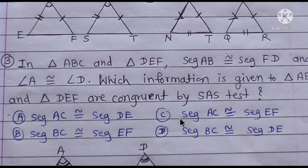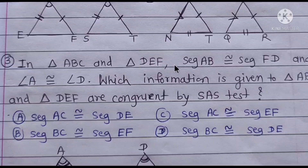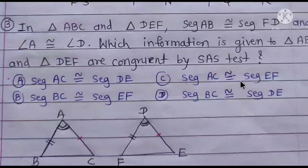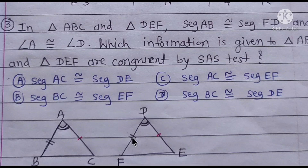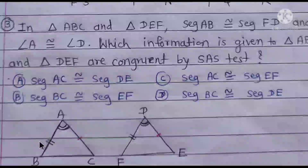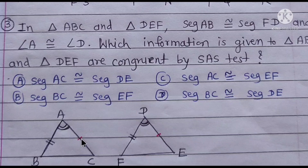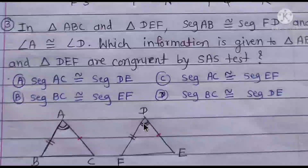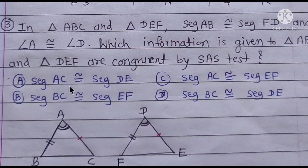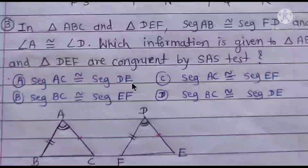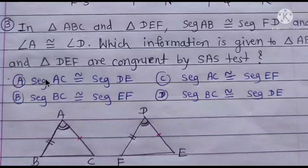Question 3: We have to figure out the congruent parts for triangles ABD and DF. AB is congruent to FD, and A is congruent to D. We need to test SAS — side AB, angle A, and side AC congruent to DE. Therefore, the answer is the first option.